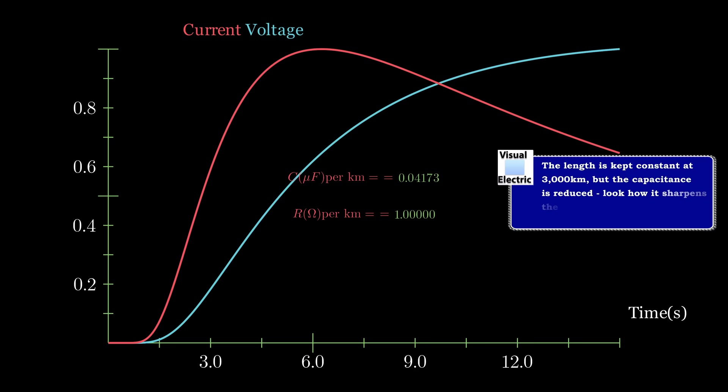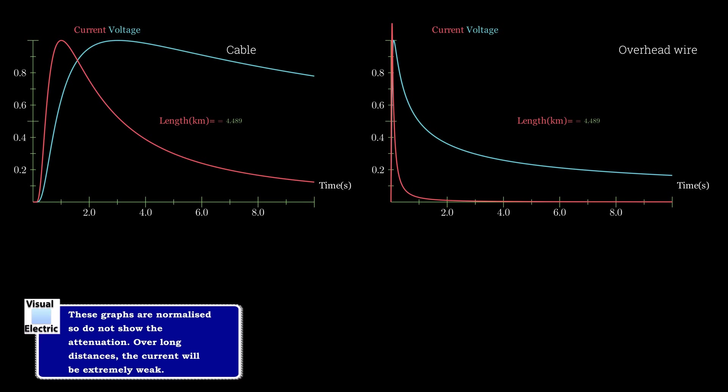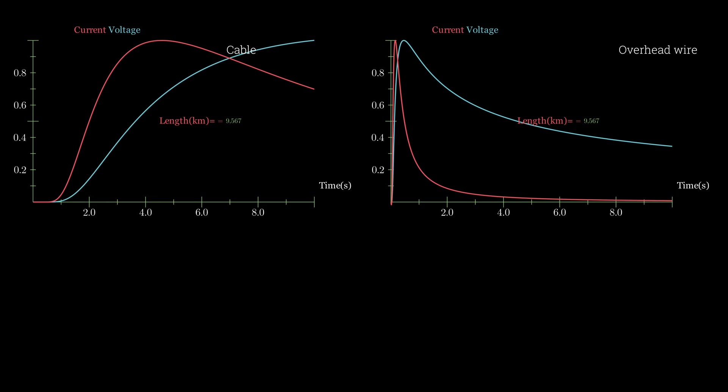We see here why overhead wires present no such problem to the telegrapher. Take a look at the difference in capacitance between a typical submarine cable and a typical overhead wire. The extra capacitance in the cable, which is largely unavoidable, is the major culprit. Whereas a pulse will travel several thousand kilometres and remain crisp and sharp, with very little time to peak, a cable will disperse the signal quickly, and the time to peak is orders of magnitude greater than the overhead wire.